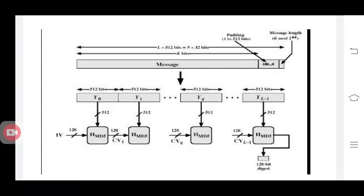You can see in the figure that you have IV for the first MD5 algorithm — that is the initialization vector. Then it is a chaining process. After the last MD5 algorithm, you are getting a 128-bit digest. That is the hash value.